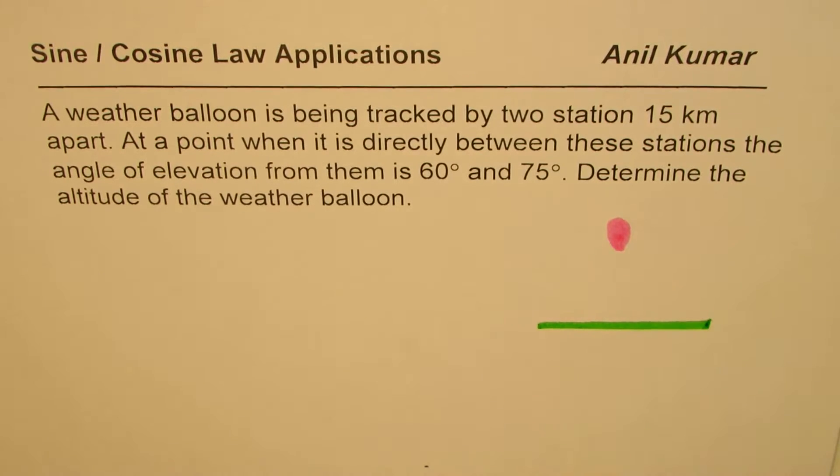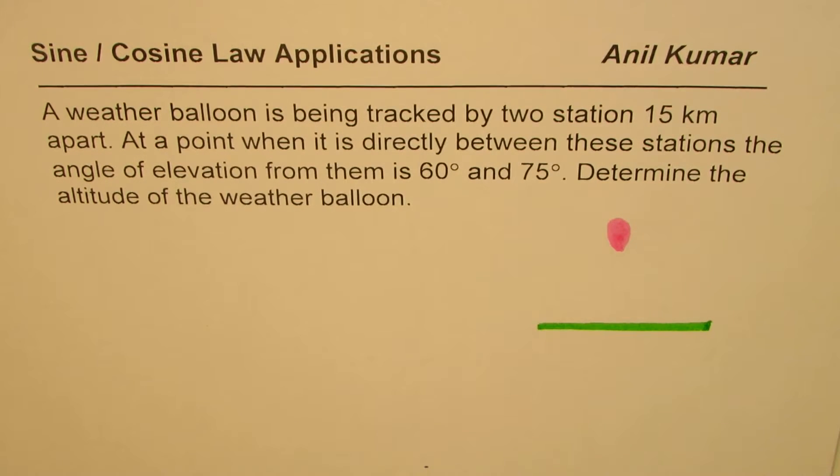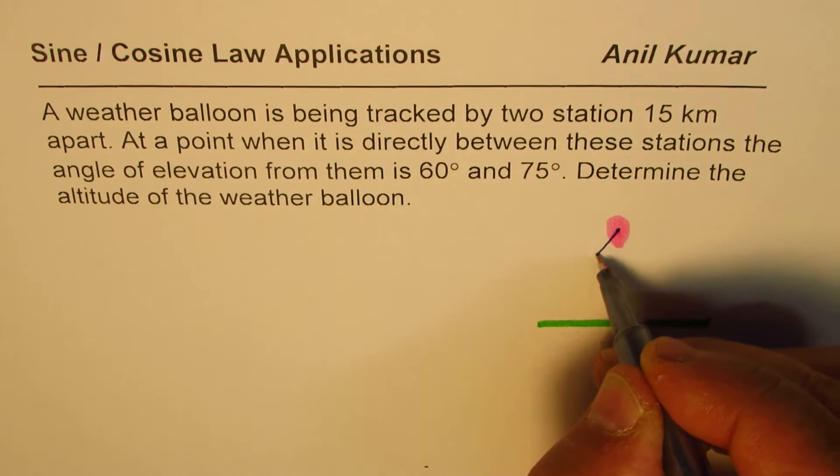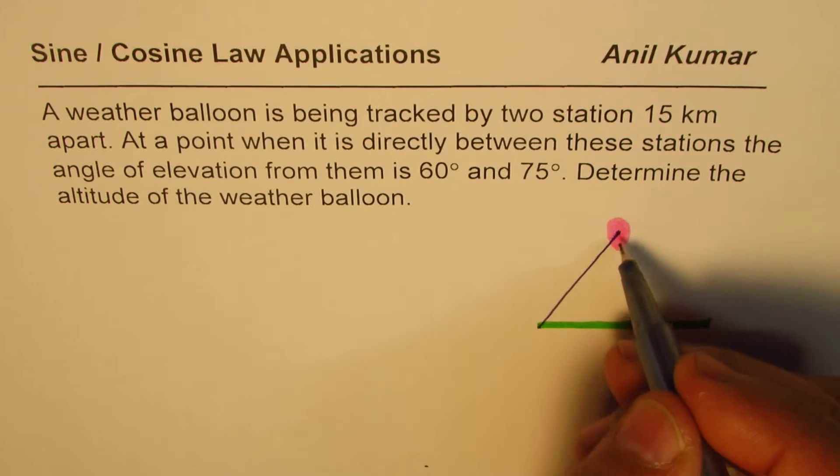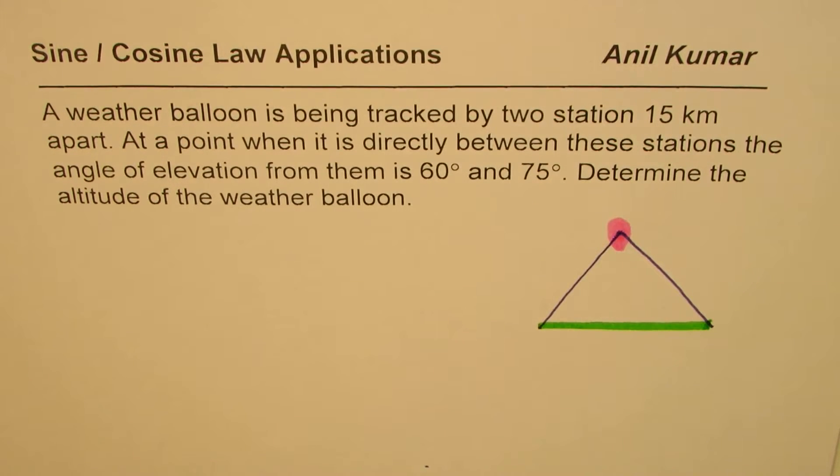What we are given here is that the angle of elevation - if you look from the bottom to the top, the angle of elevation makes with this side and the other end is given to us. So the angle of elevation from one side is 60 degrees.